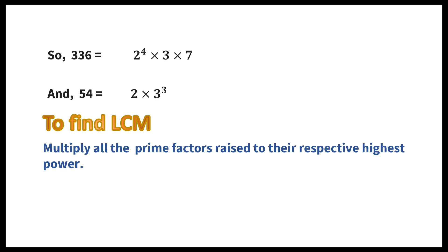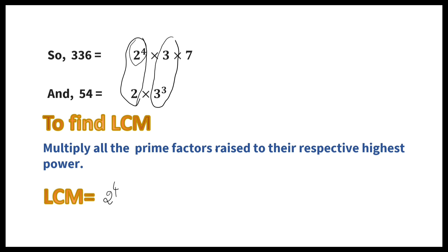To find LCM, multiply all the prime factors raised to their respective highest power. Among 2 and 2 to the power of 4, the highest degree is 2 to the power of 4. Among 3 and 3 cubed, we write 3 cubed. So LCM is equal to 2 to the power of 4 into 3 cubed into 7, which equals 3024.